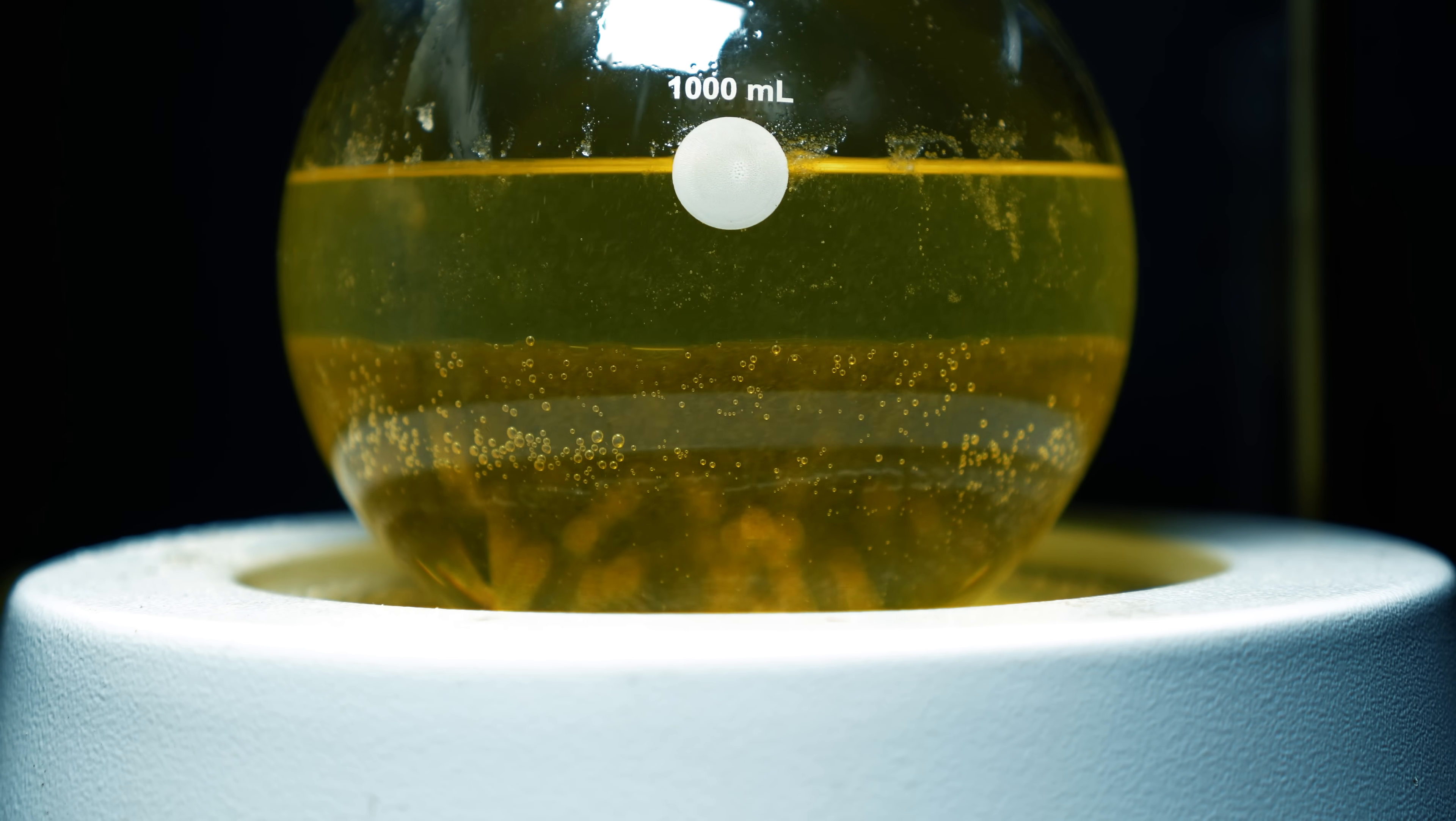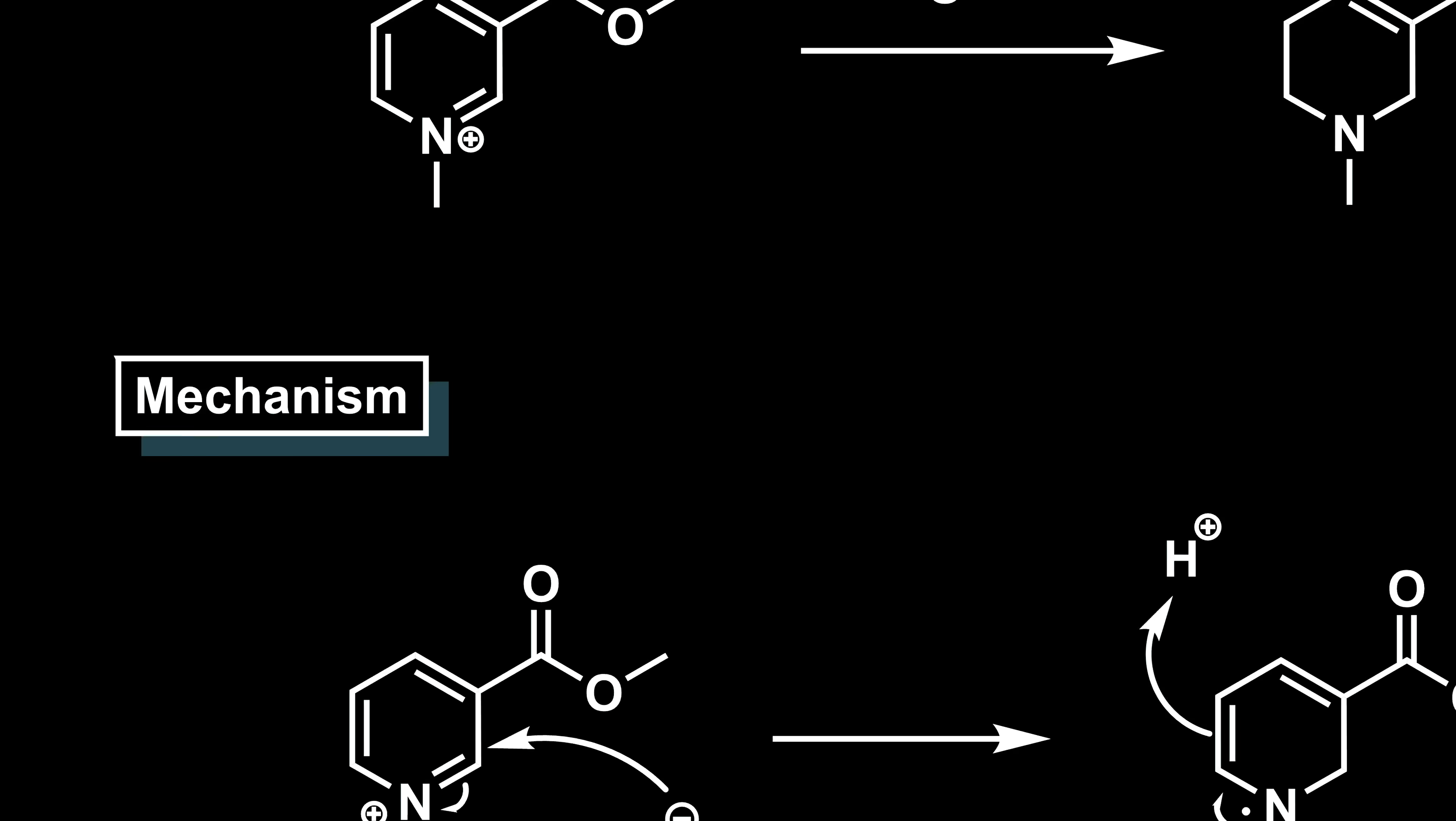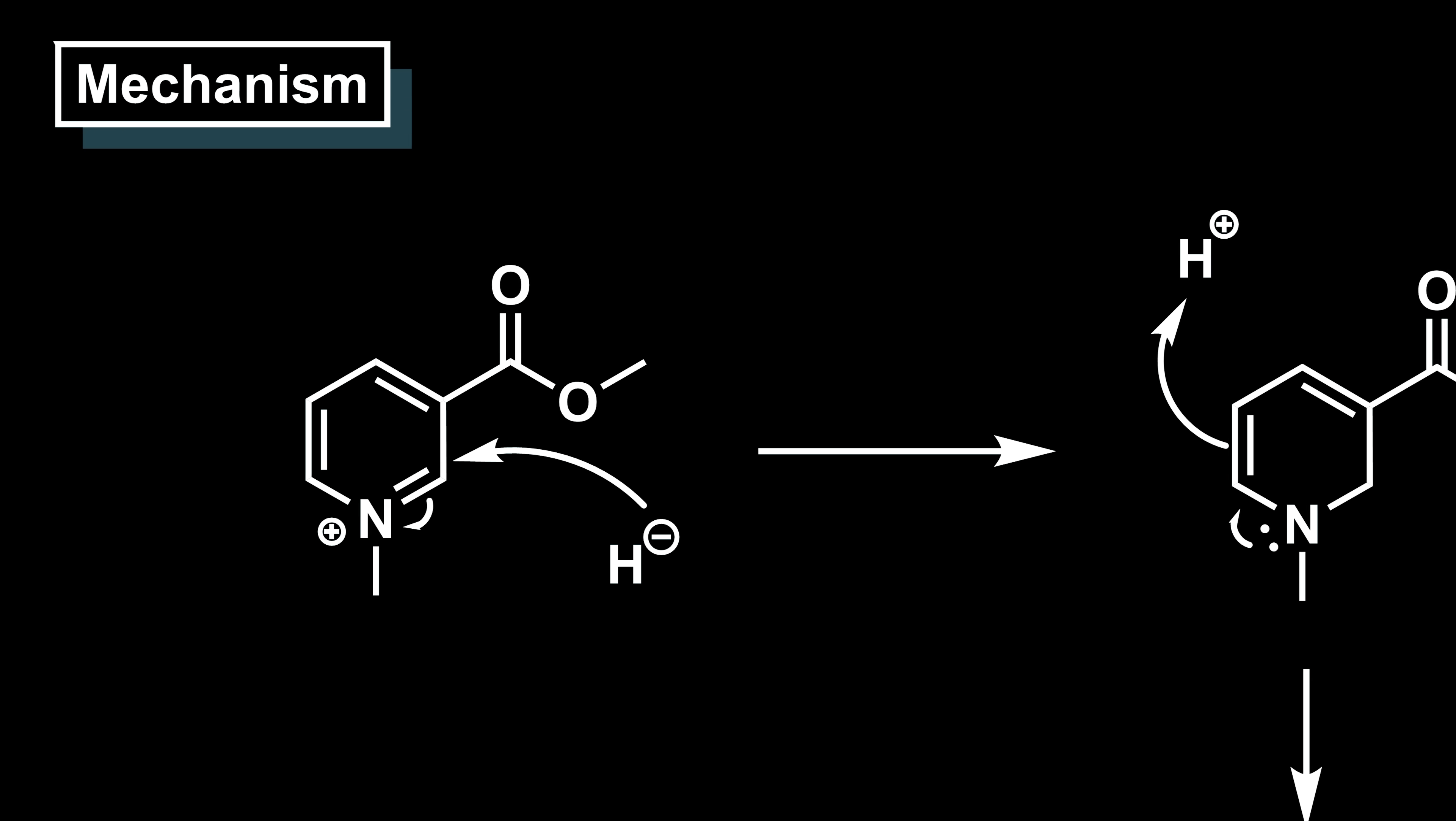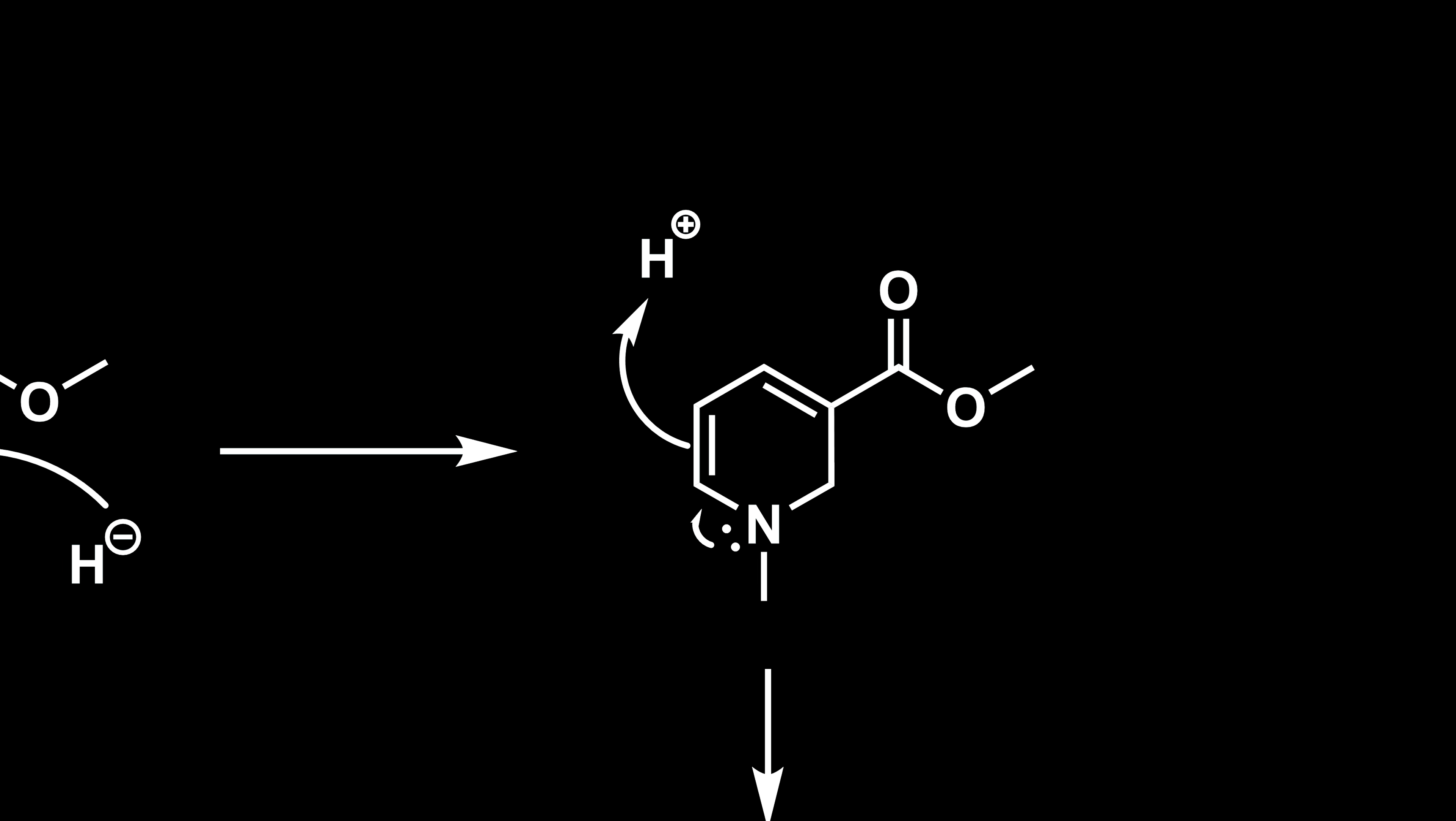Now you might be curious what this reduction really is, and let me show you. In this reaction, our previous salt, which is now an ion in solution, will be reduced to our arecoline. And we'll be using sodium triacetoxyborohydride as it will selectively reduce iminium species and aldehydes. Initially, the pyridinium ion, which is positively charged, undergoes nucleophilic attack by a hydride from the reducing agent. This forms a dihydropyridine intermediate.